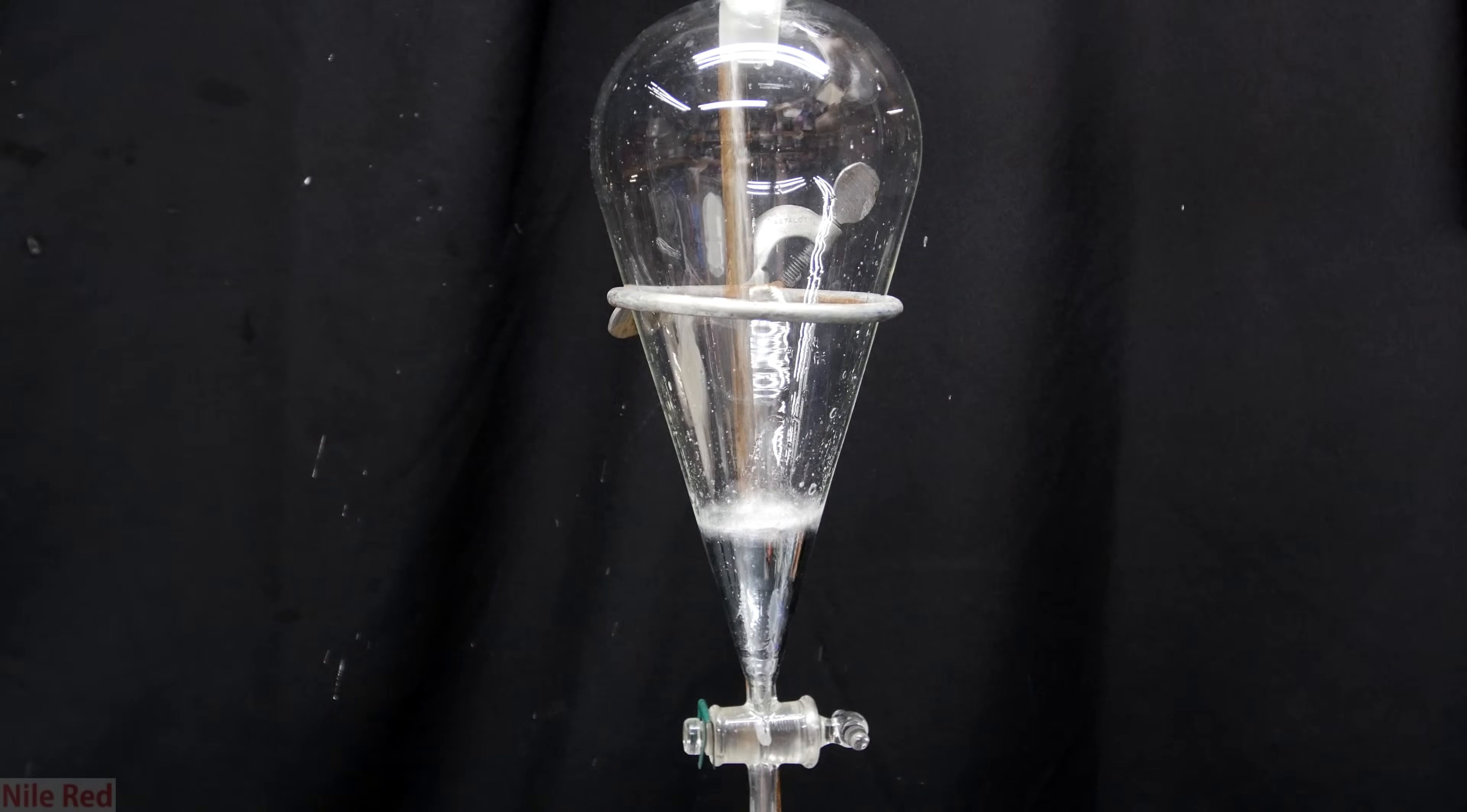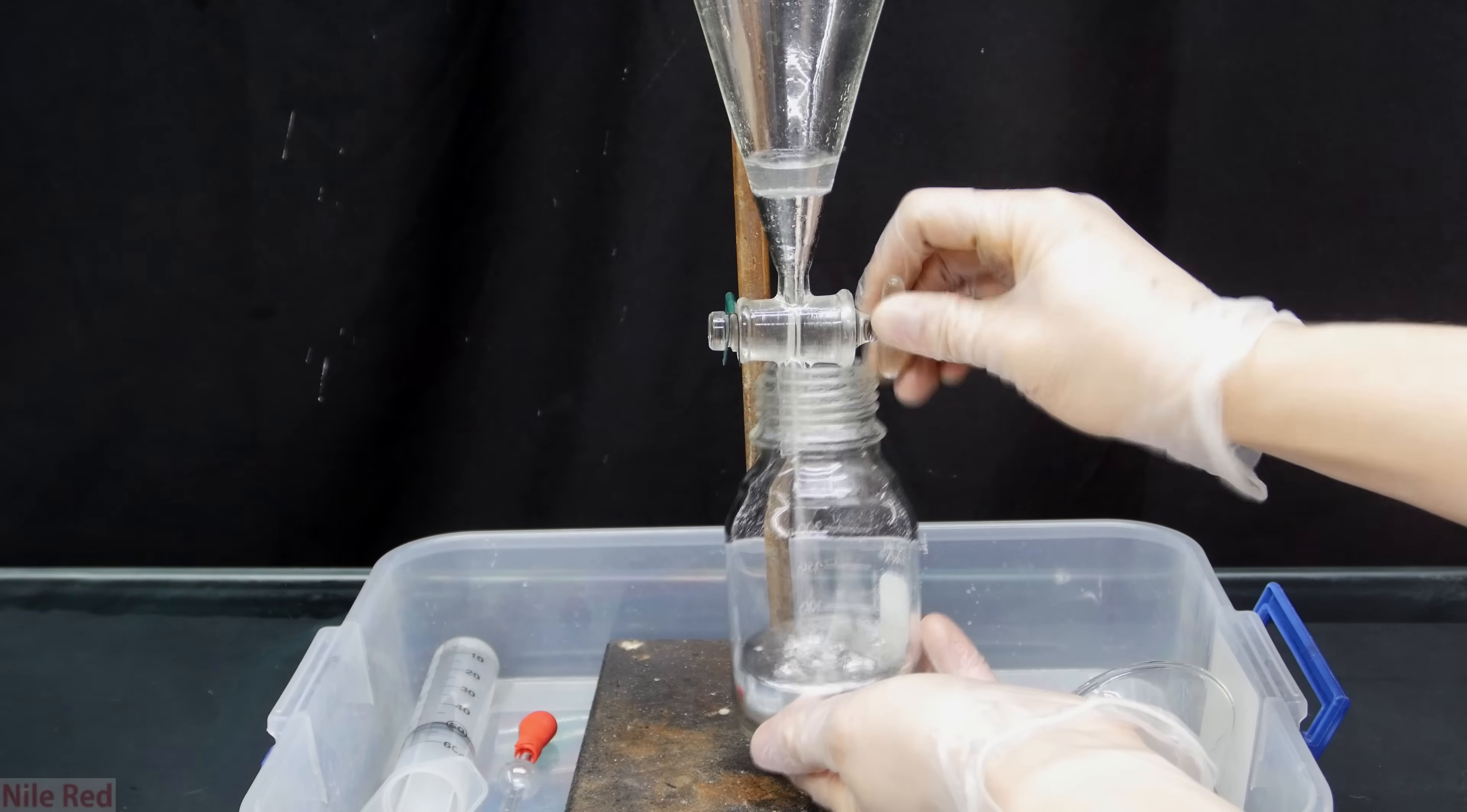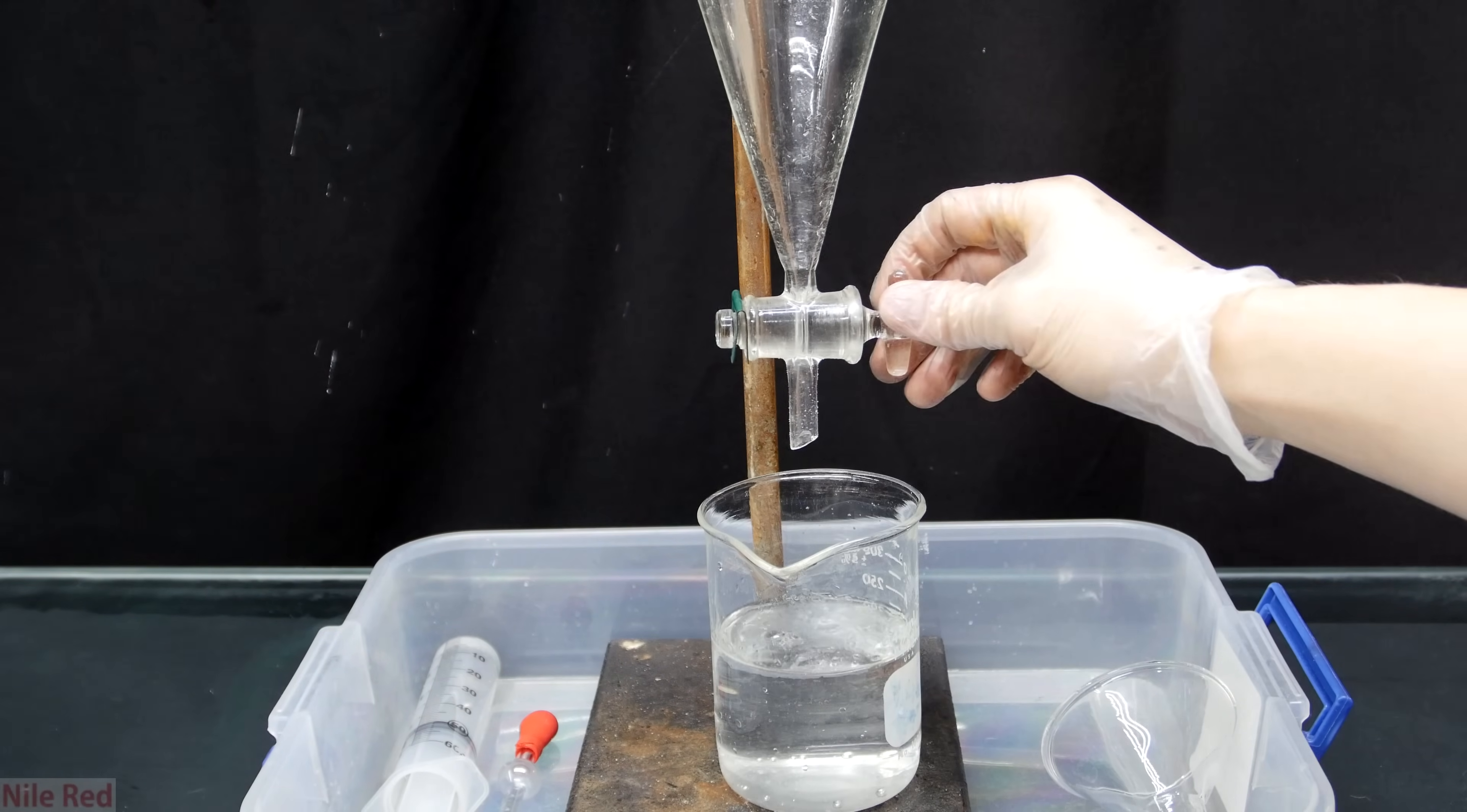So to continue cleaning up the mercury, it's poured into a separatory funnel. The mercury is then quickly drained back into the bottle so we can separate it from that oily water layer above. Once all the mercury is removed, we can place it to the side and then we can collect the water oil waste in a beaker.